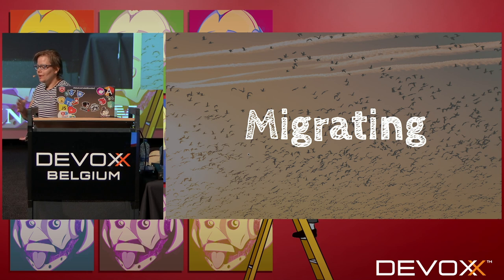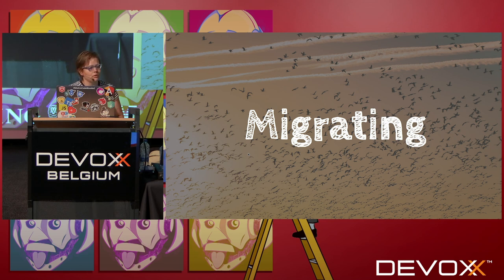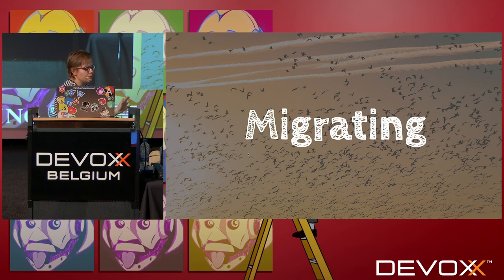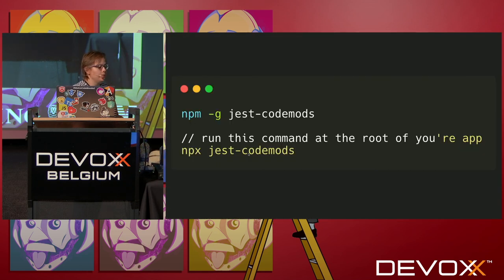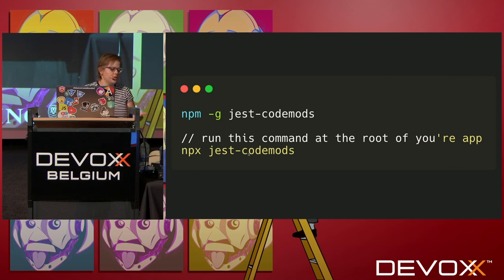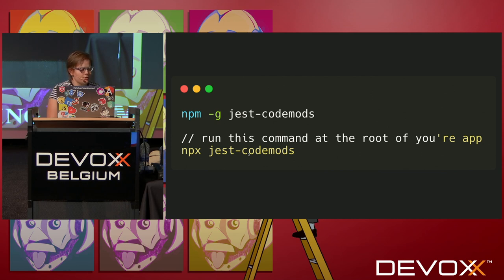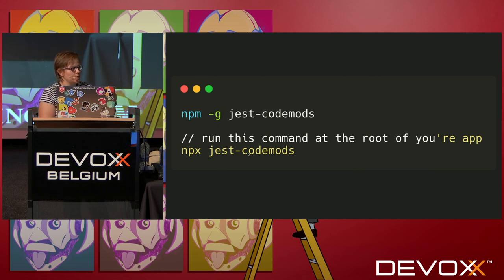If you want to migrate existing code to Jest — maybe you have thousands of Jasmine tests — Jest provides `jest-codemods`. Running `npx jest-codemods` will change your code to Jest syntax. If you transform it yourself, the hardest part is mocked-out data, since the syntax differs: replace your Jasmine spy objects with `jest.fn()`. But running the codemod command will mostly handle it for you.